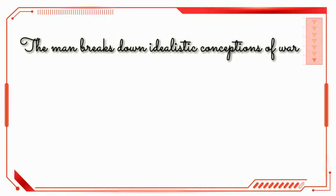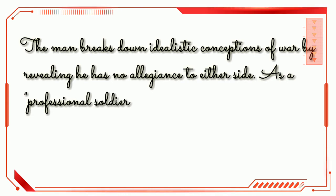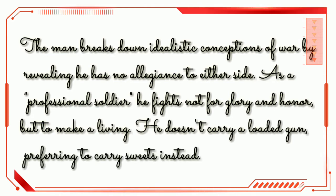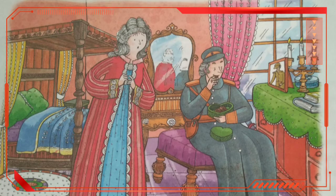The man further breaks down idealistic concepts of war by revealing he has no allegiance to either side. As a professional soldier, he fights not for glory or honor but for a much more banal purpose — to make a living. What is more, he doesn't even carry a loaded gun, preferring to carry sweets instead. This is selfish, indulgent, and weak — a kind of anti-heroic trait — and the idealistic Raina is predictably irritated. The man wishes he had some chocolates, and Raina scornfully thrusts a box of chocolate creams his way. He is extremely grateful and explains that all old soldiers carry food while the young ones carry ammunition.